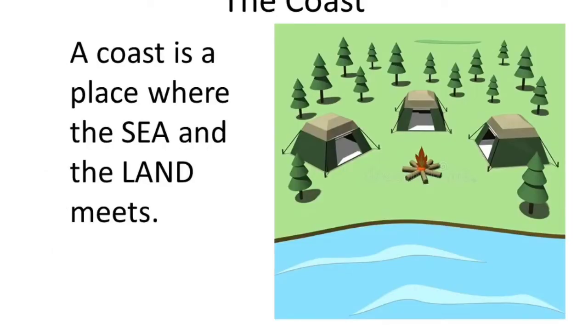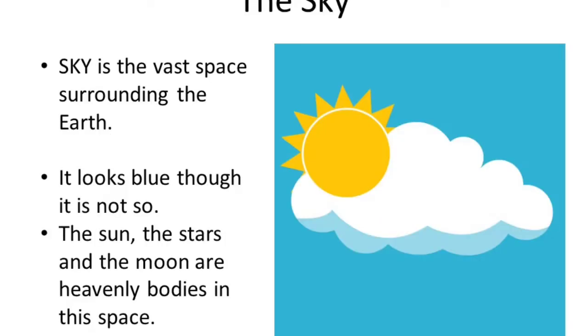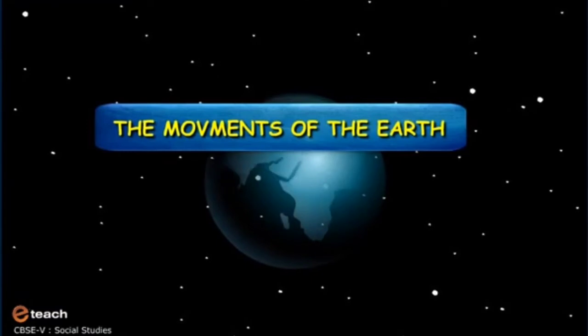The coast. A coast is a place where sea and land meets. The sky. The sky is the vast space surrounding the earth. It looks blue, though it's not so. The sun, the stars and the moon are all the heavenly bodies that are present in this space.